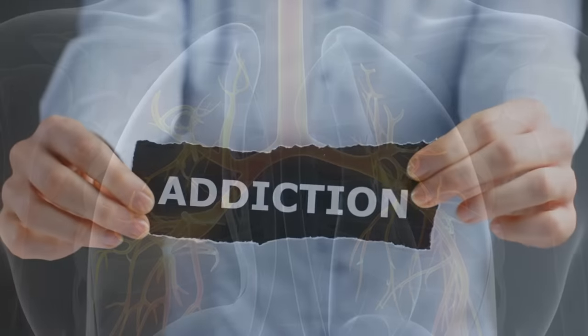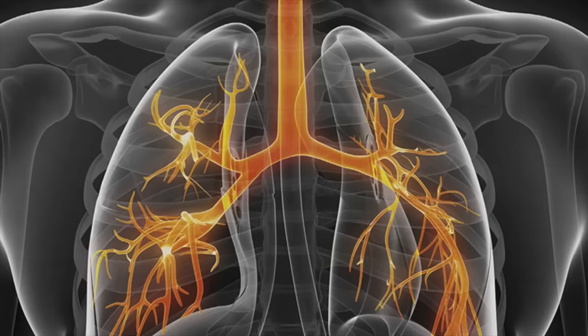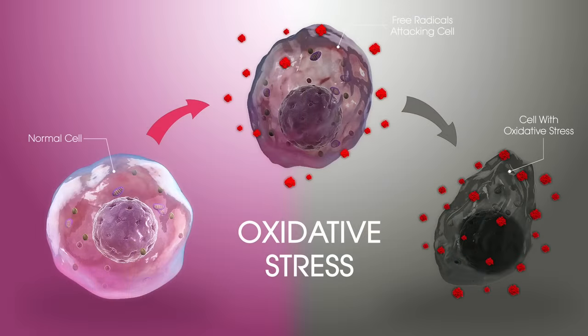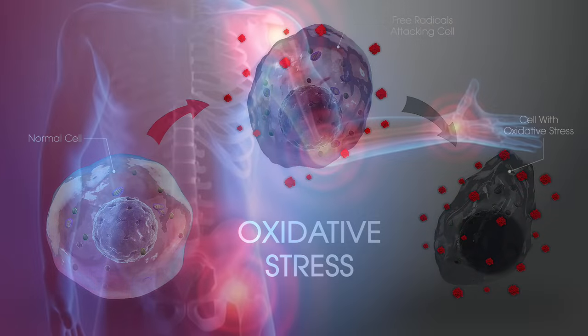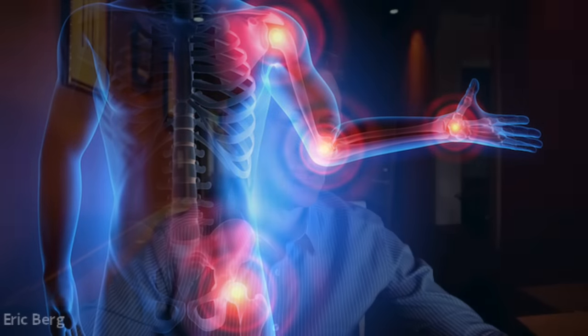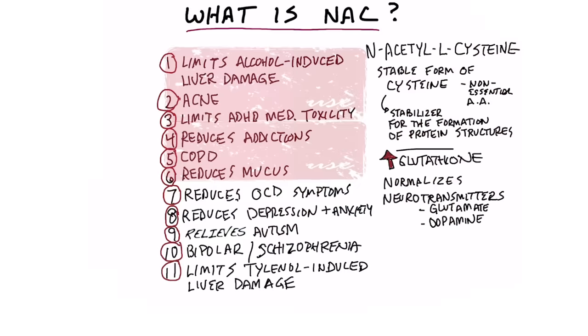It can help COPD, which is chronic obstructive pulmonary disease, because with this condition there's a lot of oxidation and inflammation going on. NAC helps reduce mucus, so it's good for pneumonia, lung issues, asthma, and bronchitis.